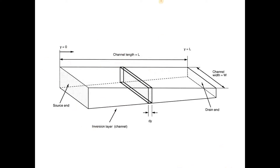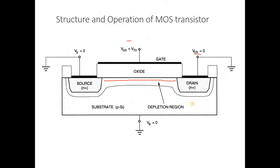For better understanding, we use an assumption called the Gradual Channel Approximation (GCA). It means the channel is represented by a 3D structure where the source end and the drain end are represented separately. We focus on the channel length L and width W, analyzing a very small area of the channel.